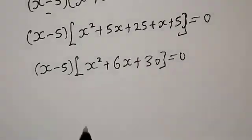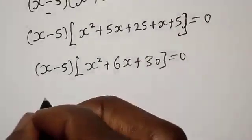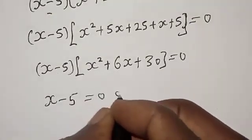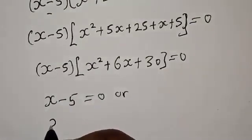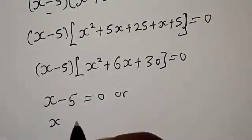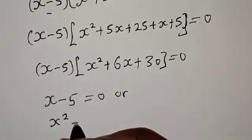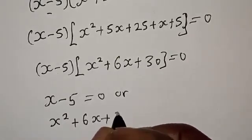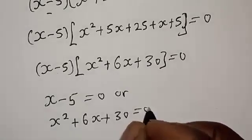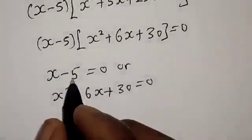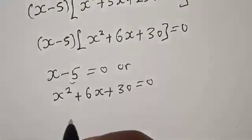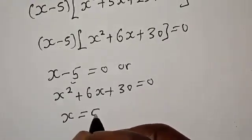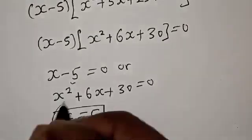We have two cases here. Case one: s minus 5 equals zero, giving us s is equal to 5. That is the first root. Case two: s squared plus 6s plus 30 equals zero, which we will solve using the quadratic formula.